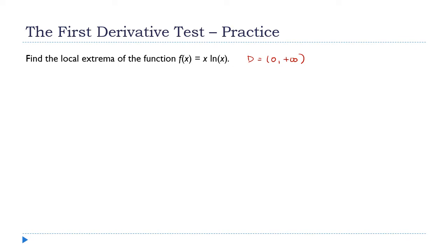So if I get critical values that are outside of that domain, cross them off. We're not going to be interested in them. The function cannot have a maximum or minimum value at a place where it isn't even defined.